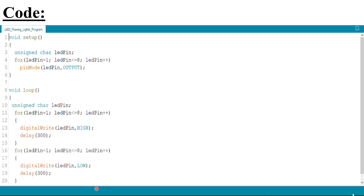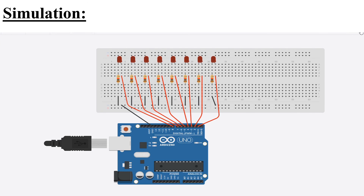Now let us simulate the project. Here is the simulation. We observe that the LEDs glow up successively and dim one after the other. This is the output of the project. Thank you.